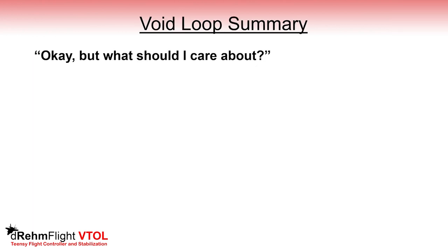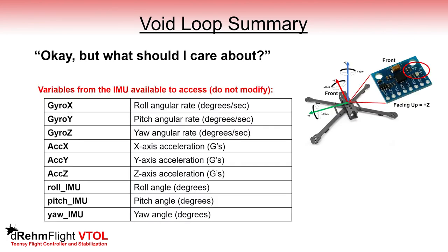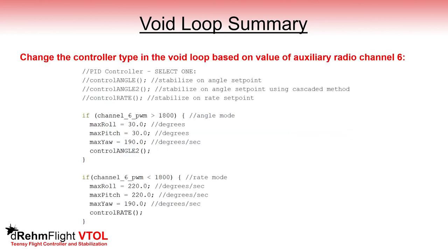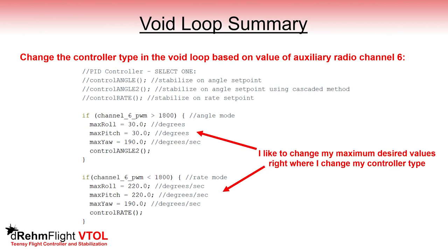We just covered a lot having to do with the complete code, but you may be wondering what you should actually care about. This is a list of all the data from the IMU that could be of interest — for example for your own data logging or if you'd like to write your own controller function. You may freely access these anywhere in the code but since they are measurements you shouldn't try to modify them. The max roll, pitch, and yaw variables will be of interest to set your maximum angle or angular rates for the controller. You'll need to select one and only one controller type at a time, and using a simple if statement monitoring the extra channel 6 variable you can toggle between controller types.